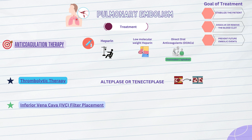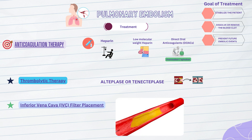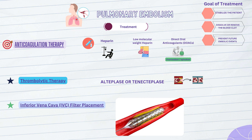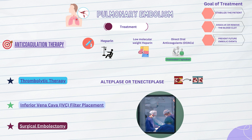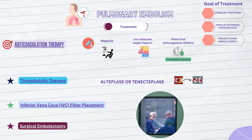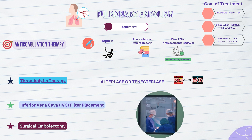Inferior vena cava, or IVC, filter placement is another option. In some situations, when anticoagulation therapy is contraindicated or insufficient, an IVC filter may be inserted. This device is placed in the inferior vena cava — a large vein that returns blood from the lower body to the heart — to prevent blood clots from traveling to the lungs. Finally, surgical embolectomy involves the removal of the blood clot through a surgical procedure, typically reserved for patients with massive or life-threatening pulmonary embolism who do not respond to other treatment options.